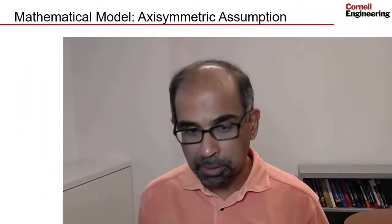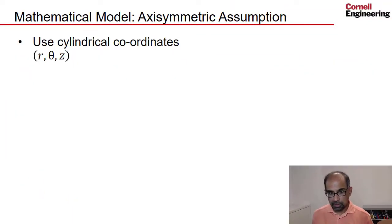The idea with the axisymmetric assumption is that you switch to cylindrical coordinates r, θ, z. I'll indicate what those coordinates are in a moment. So rather than use the usual Cartesian coordinates x, y, z, I use r, θ, z.